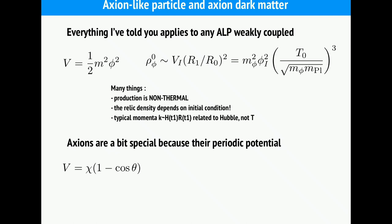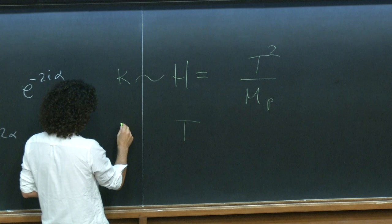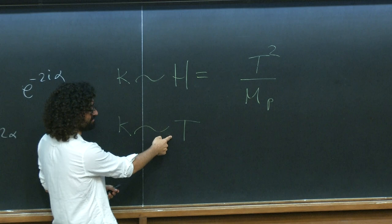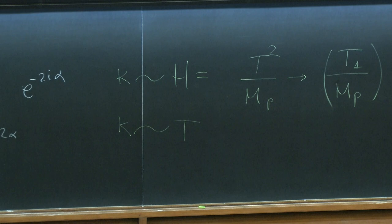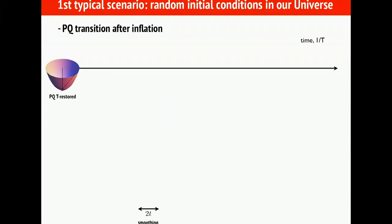In radiation domination the Hubble expansion rate is proportional to the temperature squared divided by the Planck mass. The typical momentum of an axion when produced is of order the Hubble rate — proportional to T²/M_Pl — while the typical momentum of a WIMP when it freezes out is of order the temperature T. So axion momenta are suppressed by an extra factor of T/M_Pl relative to WIMPs, where T is the temperature when the axion starts to oscillate. With M_Pl of order 10^19 GeV, these momenta are enormously smaller than the temperature, explaining why axions are cold dark matter despite being extremely light.